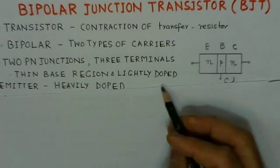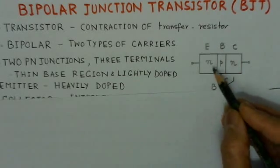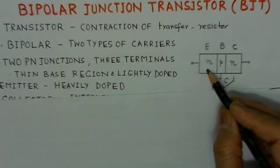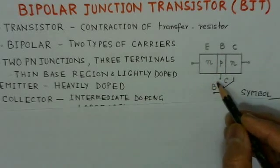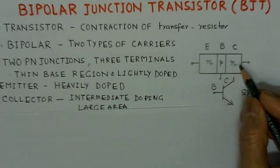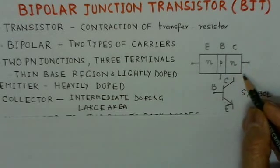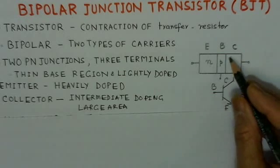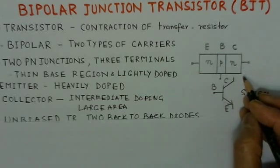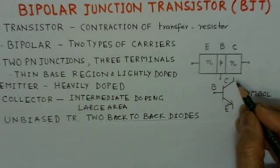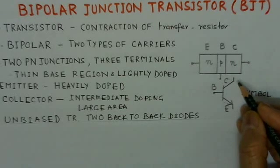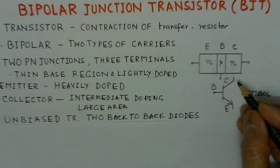Here the base region is thin and slightly doped. The emitter region is heavily doped, while the collector region is moderately doped. But it has a large physical area since it has to collect the electrons.